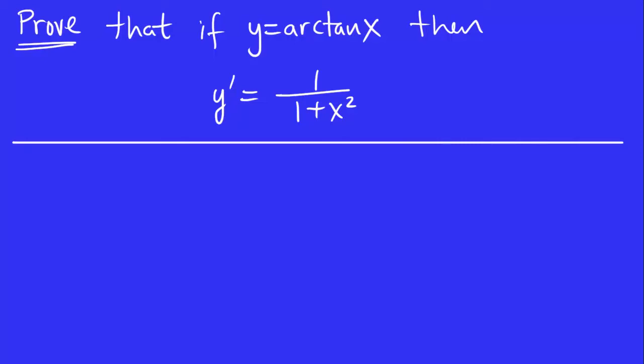Alright, so this question asks us to prove that if y is arctan x, then the derivative is 1 over 1 plus x squared.